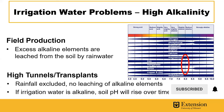In field production, this excess alkalinity in irrigation water is generally not a concern because rainfall leaches these alkaline elements down into the soil profile away from the root zone. In high tunnels, however, rainfall is excluded and there is no leaching of these alkaline elements. Therefore, if the irrigation water is alkaline, the soil pH will rise over time.